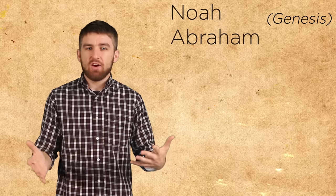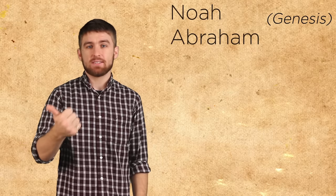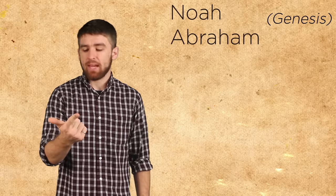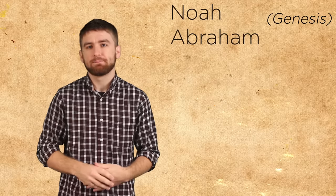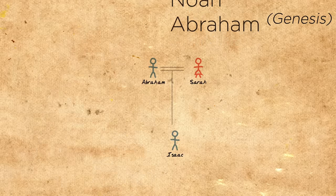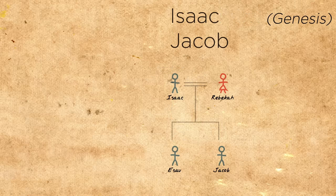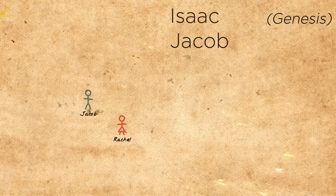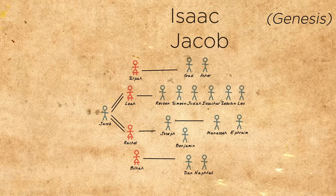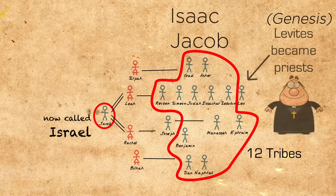Abraham and his wife Sarah are promised that they will have a great nation as descendants, that they will receive land and that they will receive God's blessing. Abraham and Sarah have Isaac, even though they're ridiculously old, and then Isaac marries Rebekah and they have Jacob and Esau. Jacob has a crush on Rachel, but he gets tricked into marrying her sister Leah. He ends up marrying both of them anyway and then having a whole bunch of kids. Somewhere in the midst of all this, God renames him Israel and then in a simplified way his kids become what we know of as the 12 tribes of Israel.